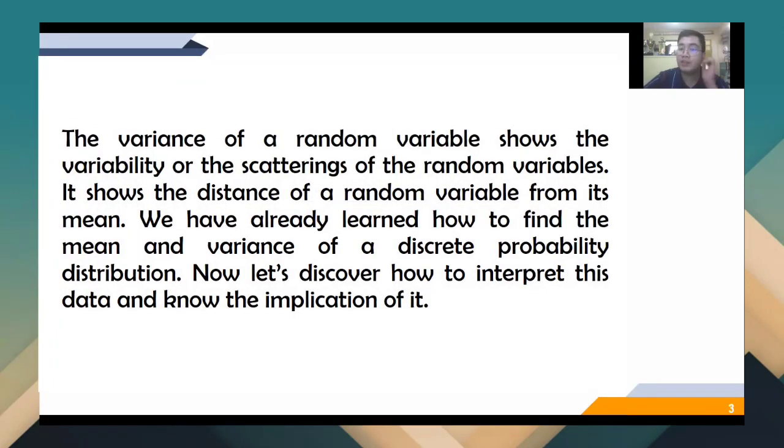This difference in scores shows the variability of the possible values of your random variable, and the random variable being the marks or scores in the test. So the variance of a random variable shows the variability or the scatterings of the random variables. In our local terms, sa tinapay, kung magbutang ka ng sandwich spread, how spread is your bread? How far is the lowest or the pinakapunta sa punta sa middle? So that's how you look at it, the scatterings. And it shows the distance of a random variable from its mean. We have already learned how to find the mean and the variance of a discrete probability distribution. Now let's discover how to interpret the data and know the implications of it. And this is very important because in our class in statistics, implication is always important. So how do we interpret the data?